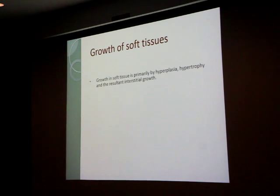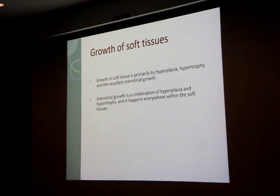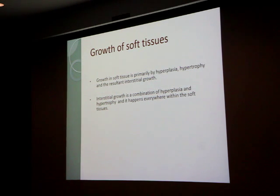When you talk about soft tissue, it's primarily by hyperplasia and hypertrophy. These two things result in what we know as interstitial growth. Interstitial growth is a combination of hyperplasia and hypertrophy and happens everywhere. If you think about any soft tissue — like muscles — they grow as one piece and expand from all points.